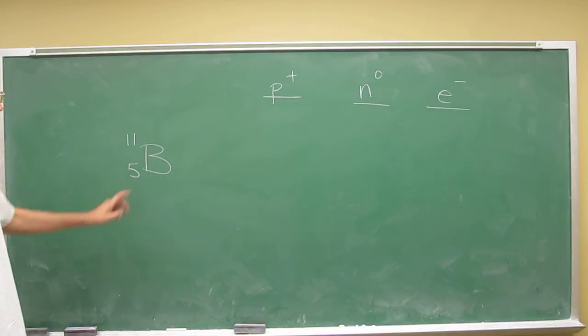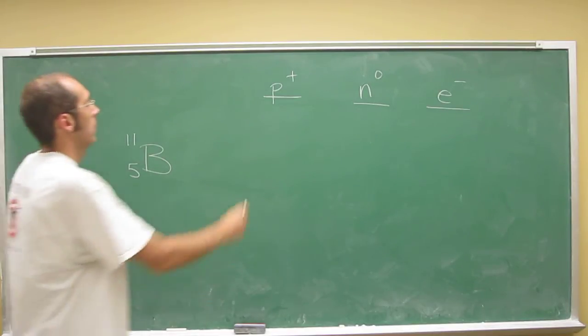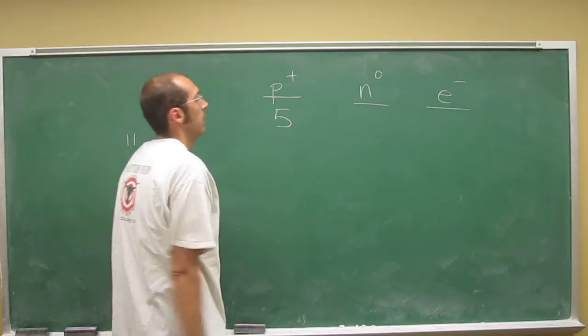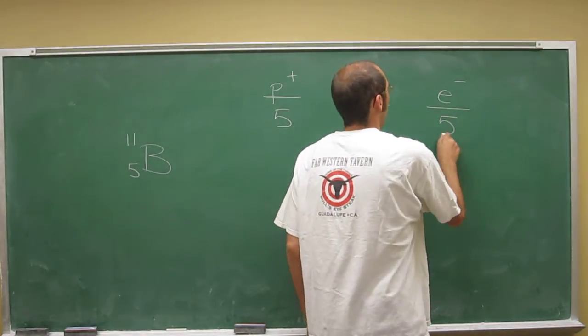Five. Okay, the atomic number tells you straight away the number of protons. Five, same as the number of electrons. Five.